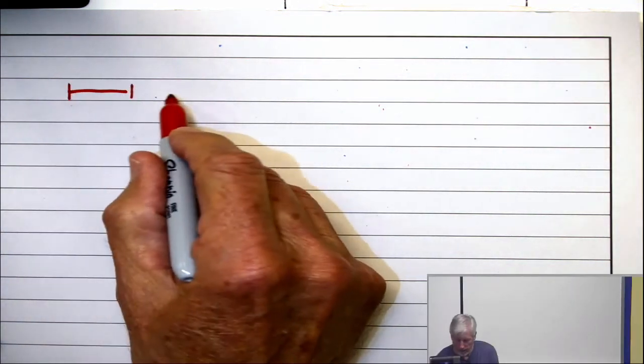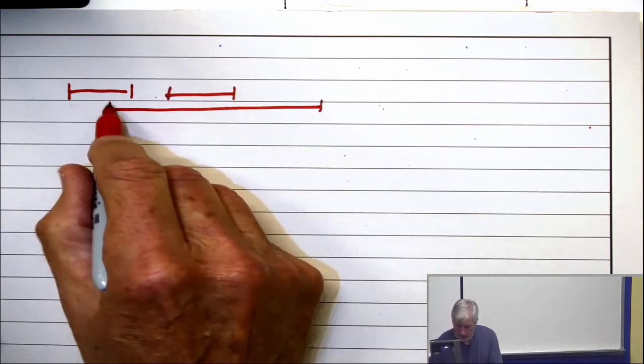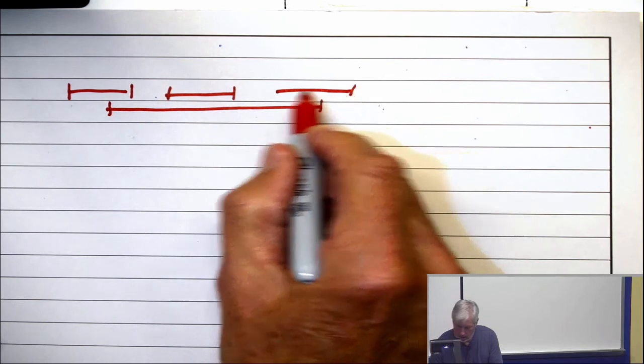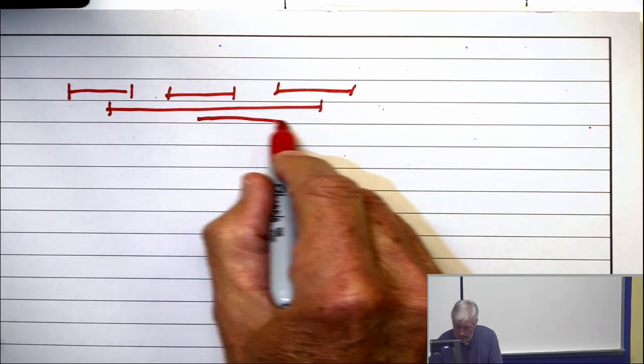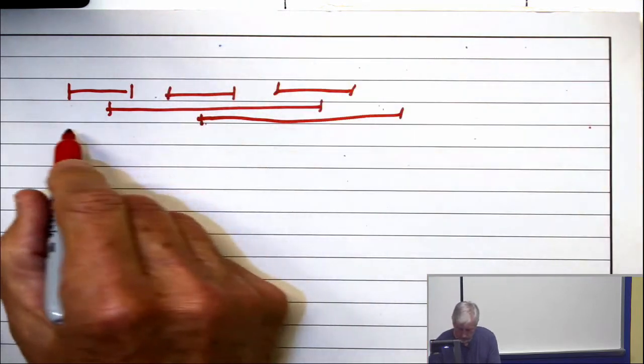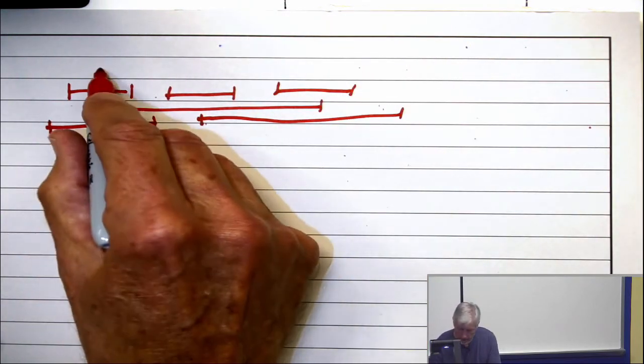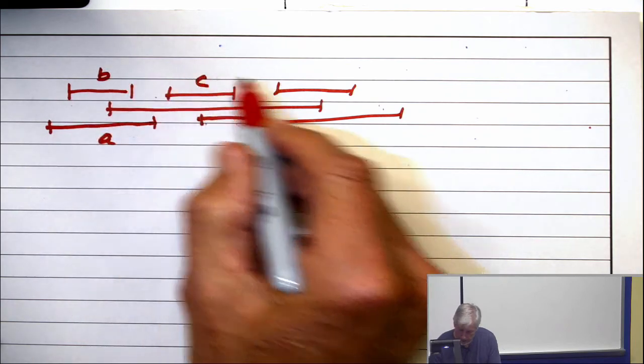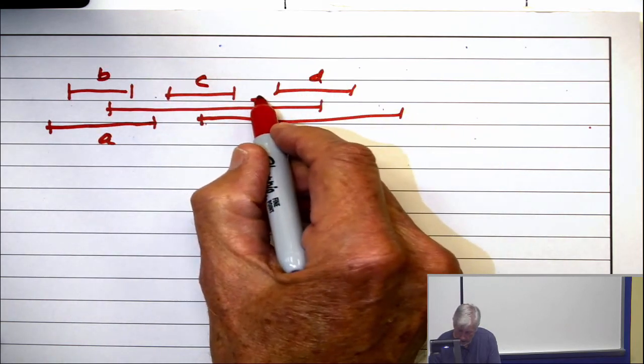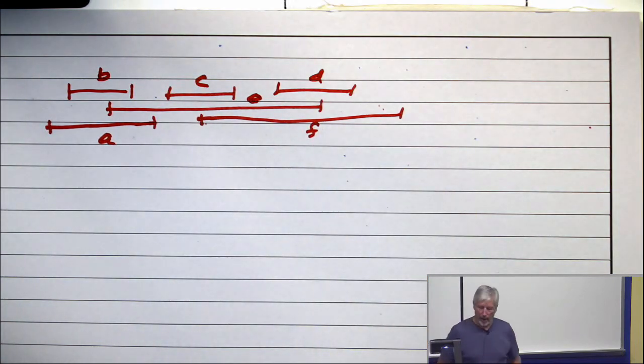So I start with something which is definitely an interval graph, because I don't make it an interval graph. A, B, C, D, E, F. That's the interval graph. Let's draw it.